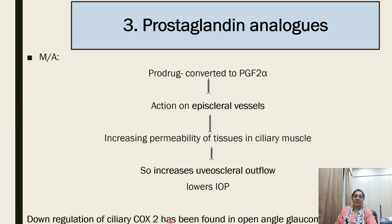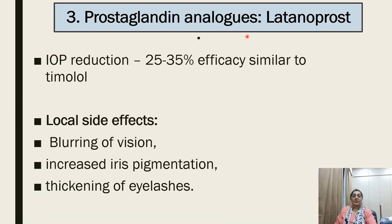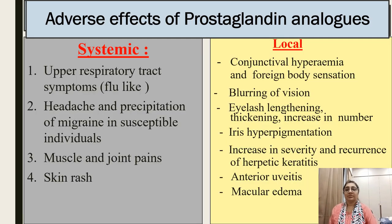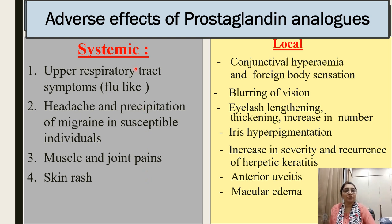Latanoprost reduces intraocular tension by 25 to 35%, with efficacy similar to beta-blocker timolol. Local side effects include blurring of vision, increased iris pigmentation, and thickening of eyelashes. Systemic adverse effects of prostaglandin analogs include upper respiratory tract symptoms like flu-like symptoms, precipitation of migraine, and muscle and joint pain and skin rashes.